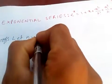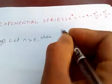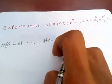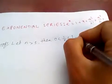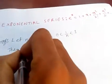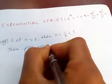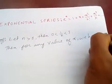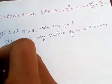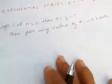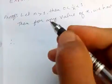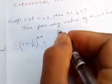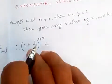Let n be greater than 1. Then 1 over n lies between 0 and 1. Then for any value of x, we consider 1 plus 1 over n to the power nx.